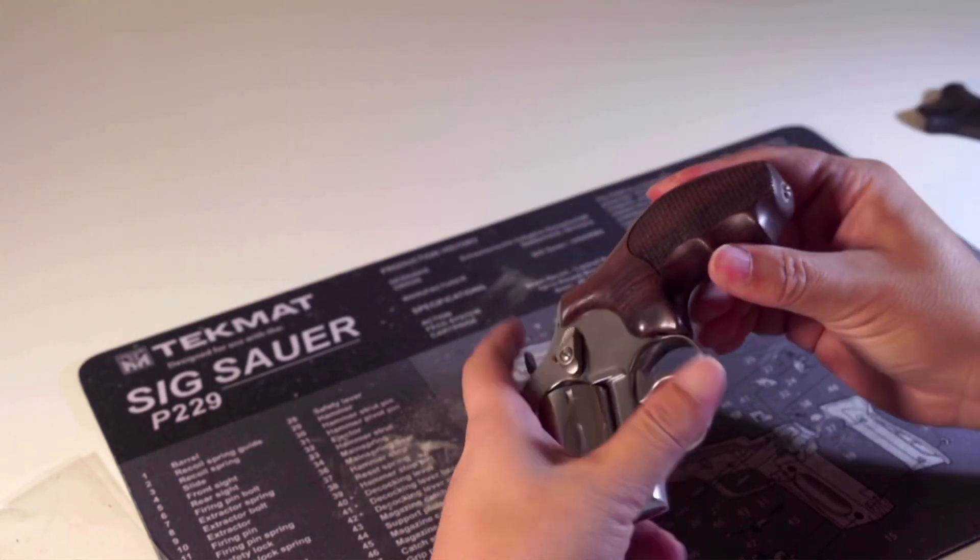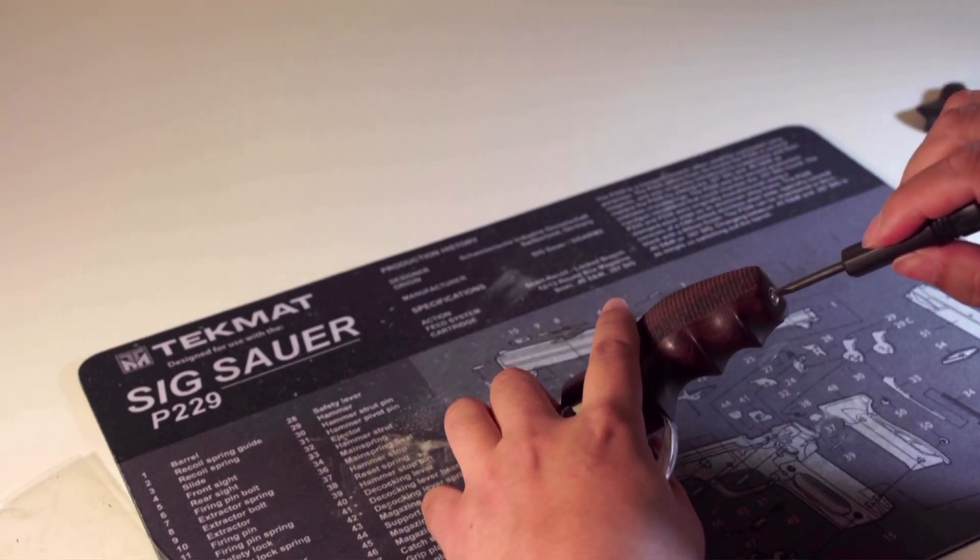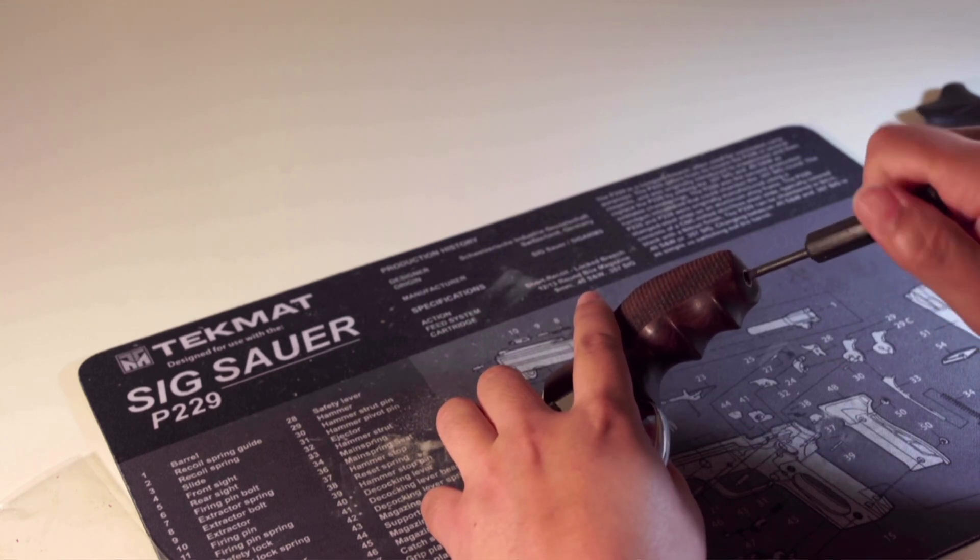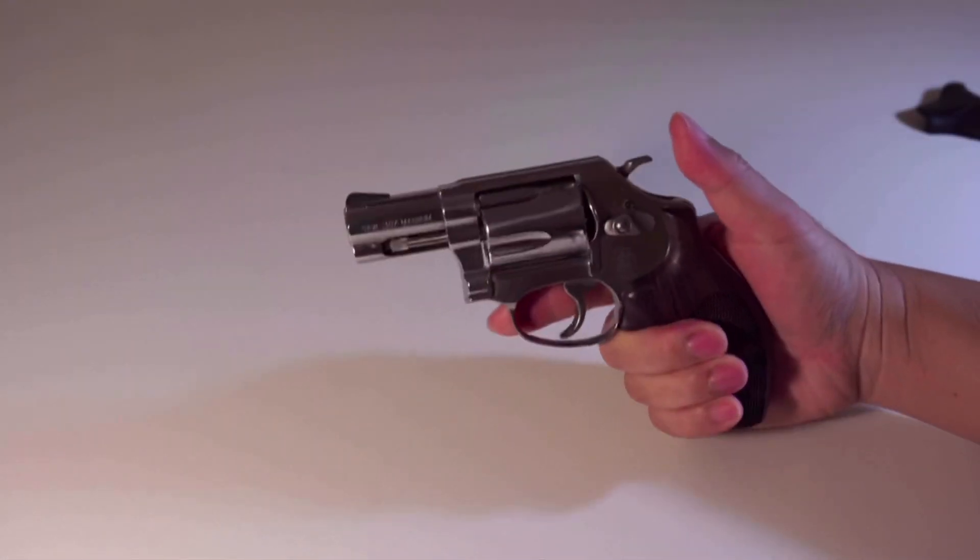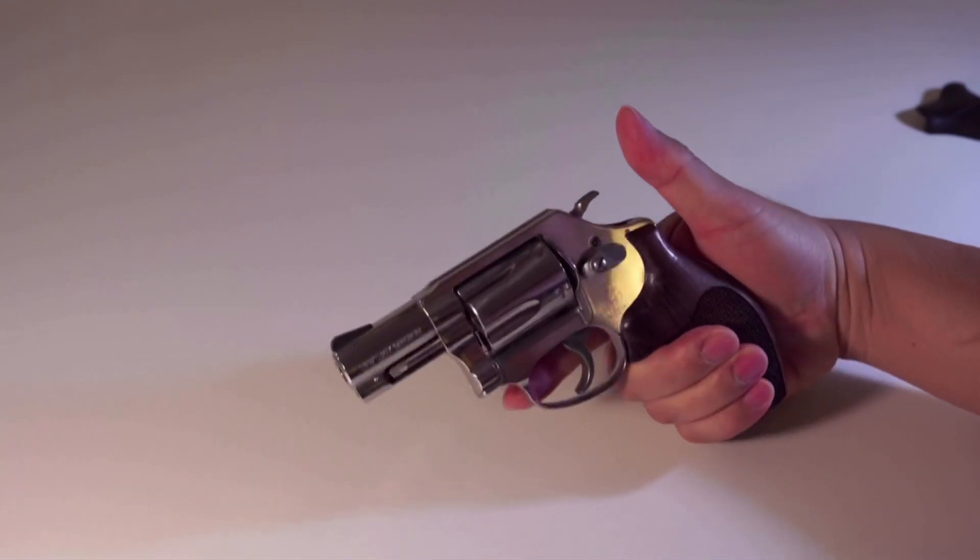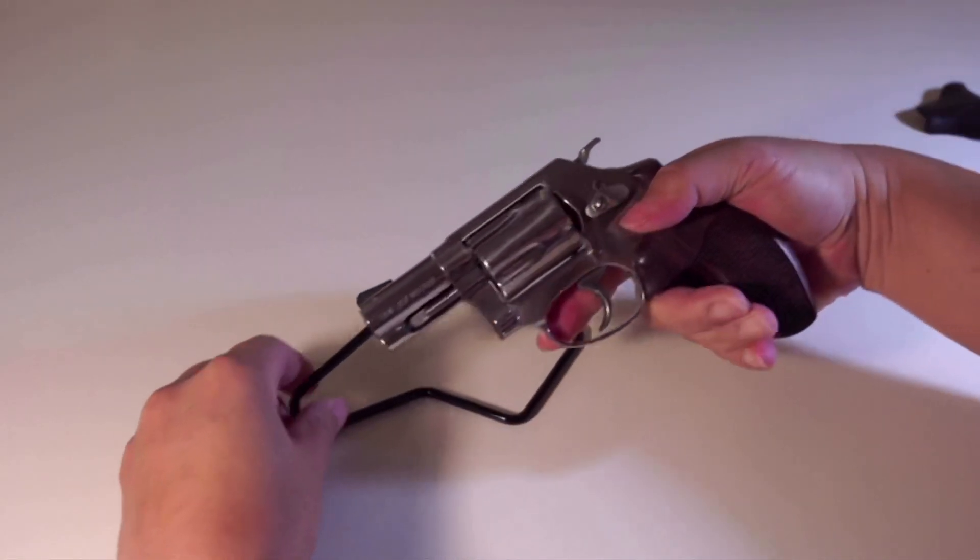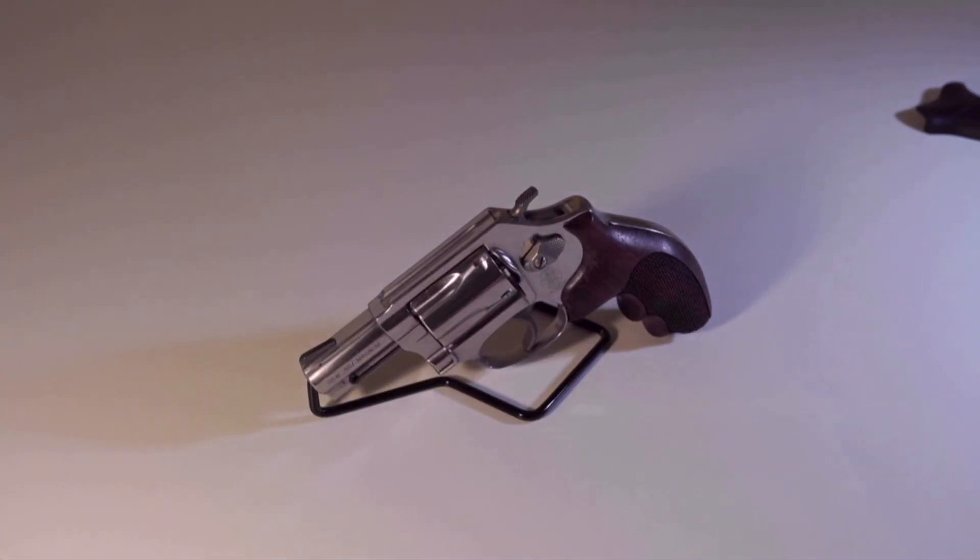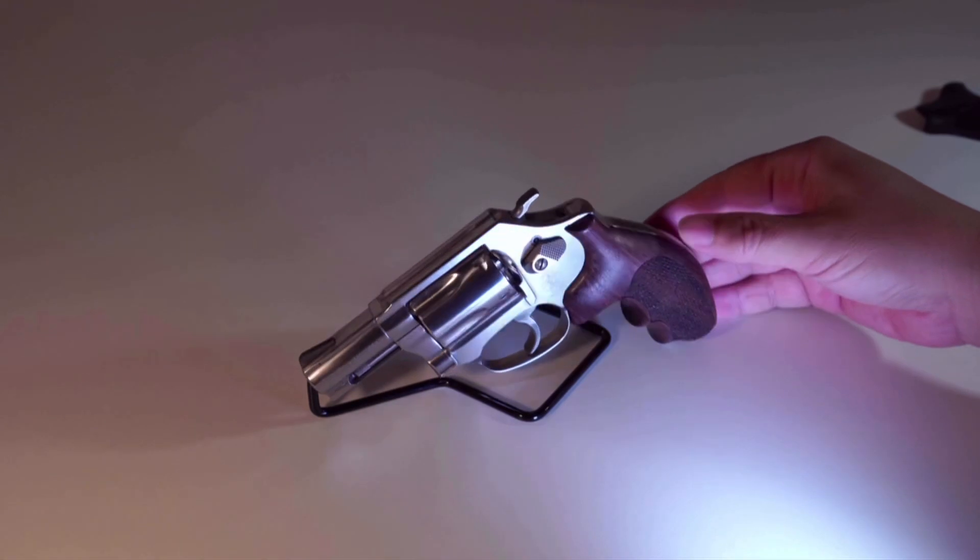And use the screw provided also by Hogue. And you are done with installing the Hogue grip. This grip is very thick and beefy. And it's very comfortable to hold. The only thing I don't like about this grip is there is no option to put on the laser Smith Wesson logo.